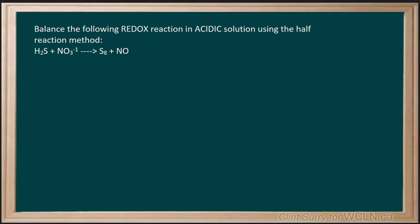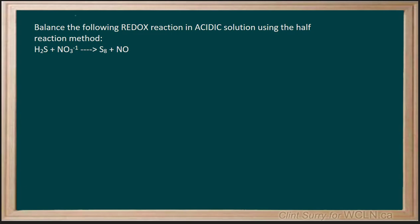Balance the following redox reaction in acidic solution using the half reaction method. The first thing we're going to do is separate into the two possible half reactions. I can see H2S going to form S8 and NO3⁻ heading to form NO.